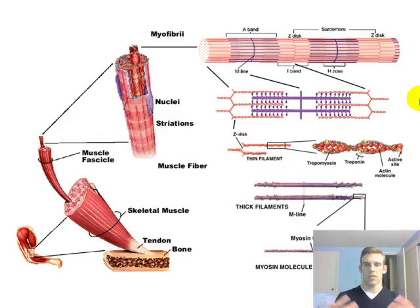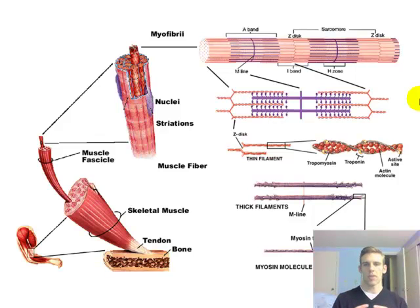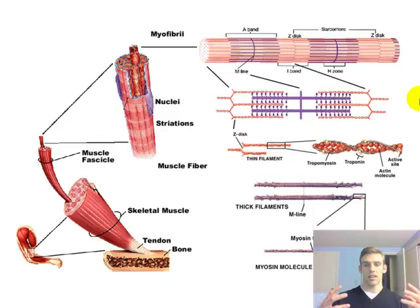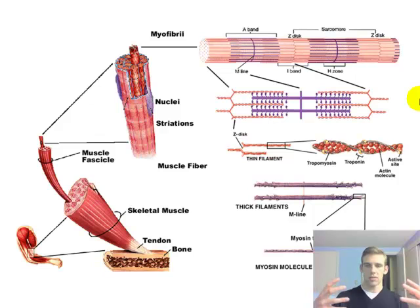The sliding filament theory of contraction is something you'll want to know — it will probably come up on a test. It was developed in 1954 by two men named Huxley, who were not related and came up with the theory independently. They established that myosin heads pull the thin filaments towards each other, causing the muscle to contract.